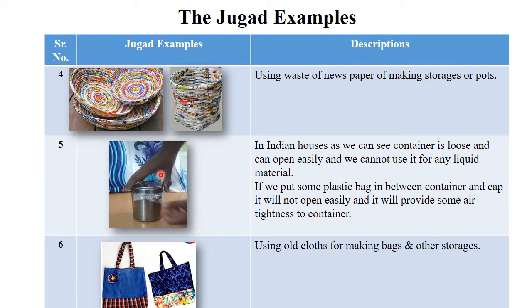I think you are all familiar with this next example. In Indian houses, we can see different containers, but sometimes steel containers have a very loose lid that can open easily. We cannot use any liquid material in such a container. So what we can do is put a plastic bag between those containers. After putting the plastic bag, the cap will not open easily because the plastic bag provides some air tightness to the container. This way you can also carry liquid material through this container. This is also one kind of Jugaad.